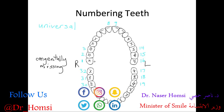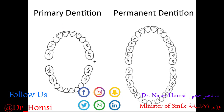The permanent dentition is what we've been talking about so far. We also have the primary dentition, which refers to the baby teeth or primary teeth. These typically start to erupt around six months, usually beginning with the lower incisors. The baby teeth come in one at a time until you have a full set of primary dentition.